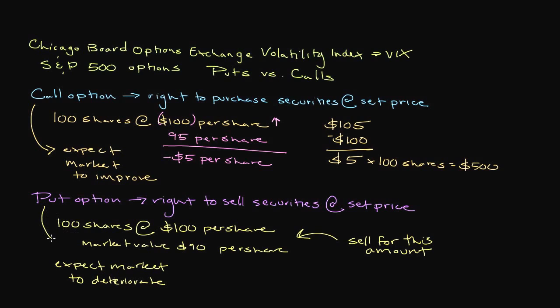Taking into account the basic economic principle of supply and demand: if investors purchase a larger number of call options, then the premiums or prices of these options will increase, which will result in a lower VIX. If investors purchase a larger number of put options, then the premiums for those options will increase, which will result in a higher VIX.